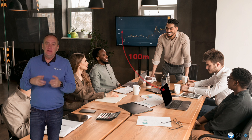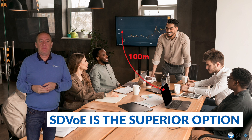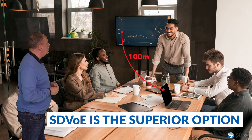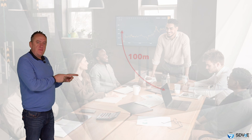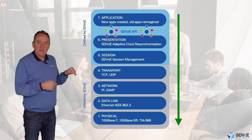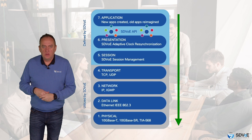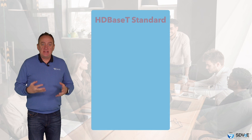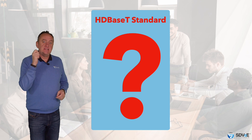Let's say you've got a conference room which needs a source connecting to a display over 100 meters of cable. SDVoE is still a far superior option than HDBaseT even with this simple point-to-point topology. SDVoE is based on the IEEE Ethernet stack all the way down to the physical layer, and this standard is adopted across the networking world. HDBaseT utilizes a standard which it created and nobody else uses, and this has led to mixed results.